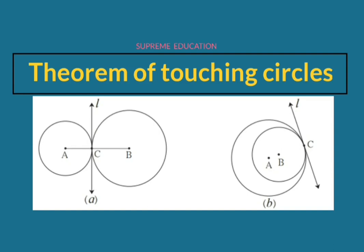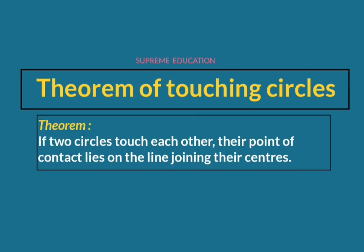Now we'll move towards the theorem of touching circles. The statement of this theorem is: if two circles touch each other, their point of contact lies on the line joining their centers.